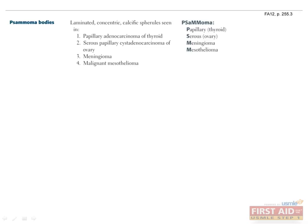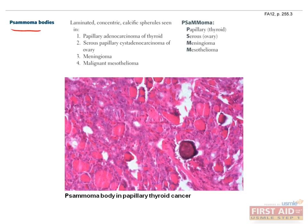Next, let's talk briefly about psammoma bodies. Students often get confused about what exactly these are and why they're important. The important thing about psammoma bodies is that they are very distinct under the microscope, so they are easy to recognize. Also, they're only found in a few conditions which are listed here.